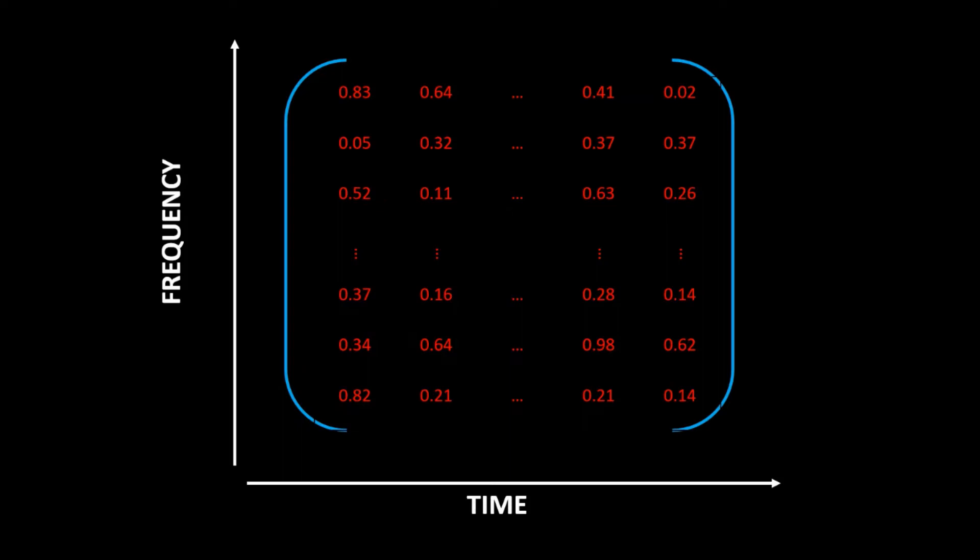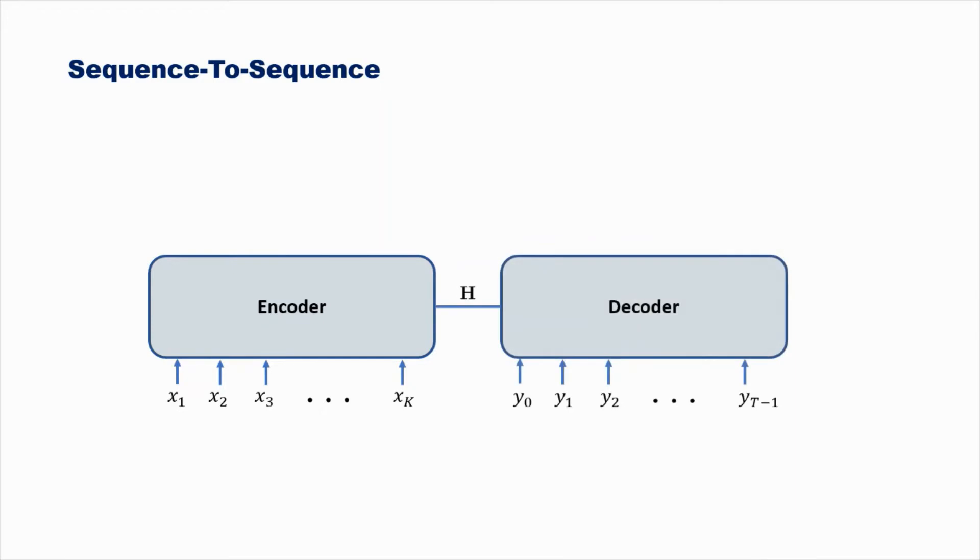So let's first take a look at the generic architecture for sequence-to-sequence tasks. So we have a sequential input denoted from x1 to xk. These inputs are passed to an encoder module that mathematically manipulates the input into some hidden representation that we denote H. This hidden representation is then passed to a decoder module. The decoder module is responsible for generating the output sequence that we have denoted y1 to yt.